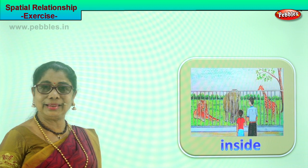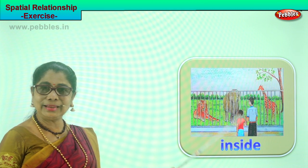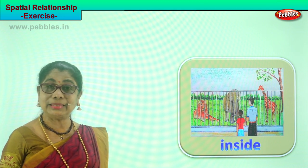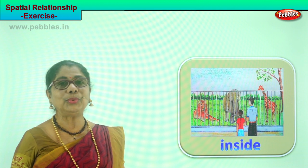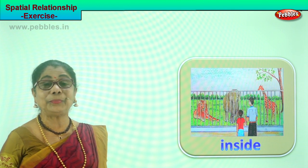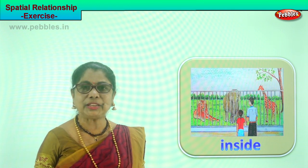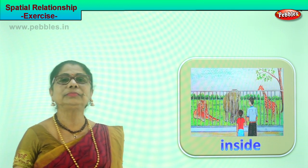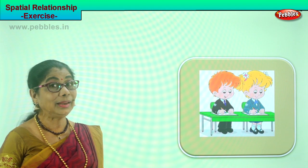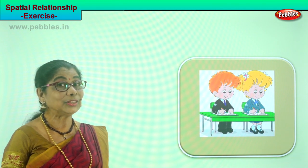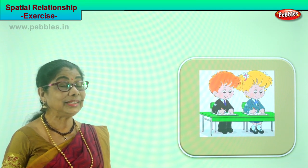So you learn what is inside and outside. What is inside the zoo? Wild animals. Outside are the people who go to see them. Shall we look at another picture? What are we learning? Spatial relationship.